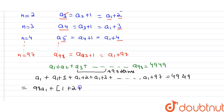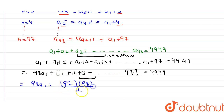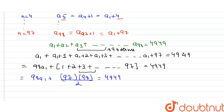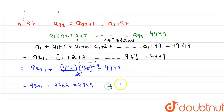The sum 1 + 2 + ... + 97 is the sum of natural numbers up to 97, which equals n(n+1)/2 = 97 × 98 / 2 = 49 × 97 = 4753. So 98·a1 + 4753 = 4949, which gives 98·a1 = 4949 − 4753 = 196.